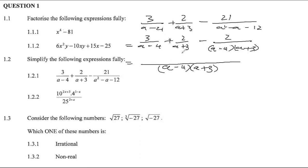Remember, the LCD is the lowest number which can accommodate all these denominators — it can be written as a product of all the individual denominators. We can see (a minus 4) is a factor, (a plus 3) is a factor, and the whole trinomial is represented by their product, so we don't need to repeat either factor. Think of each expression as a number; the LCD contains both (a minus 4) and (a plus 3).